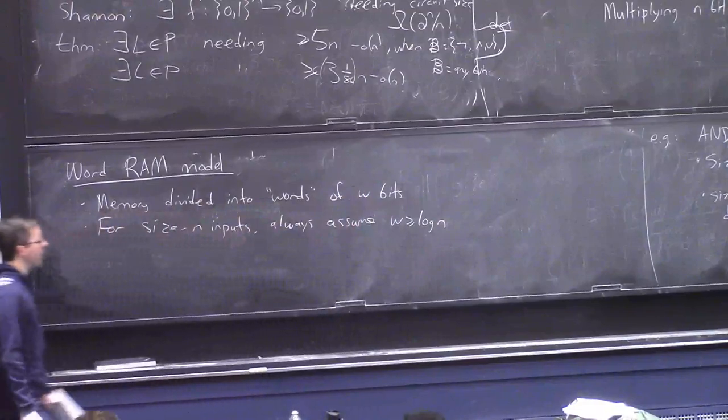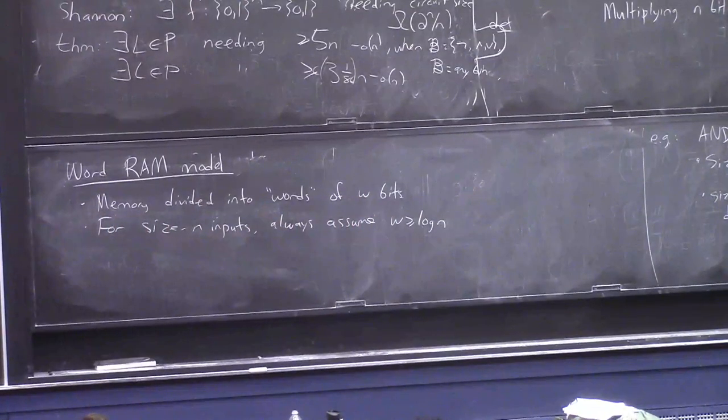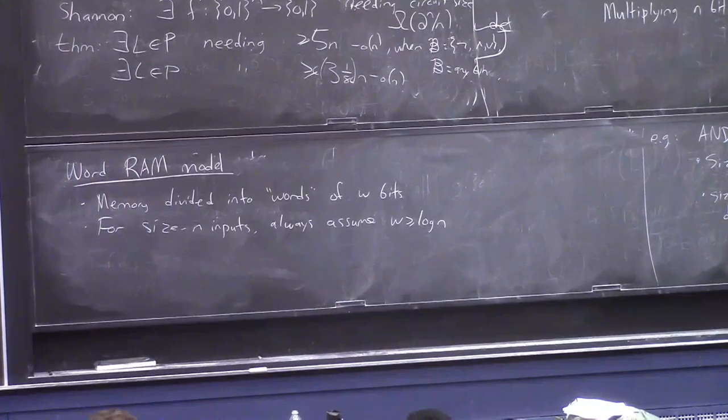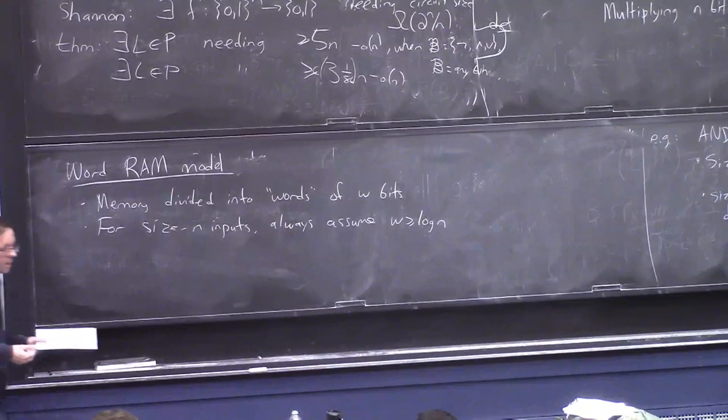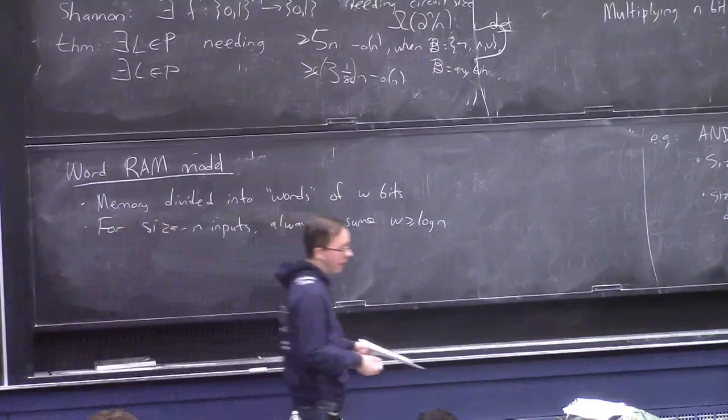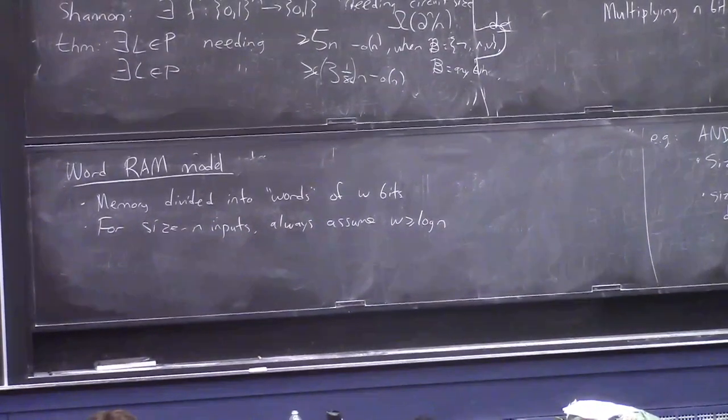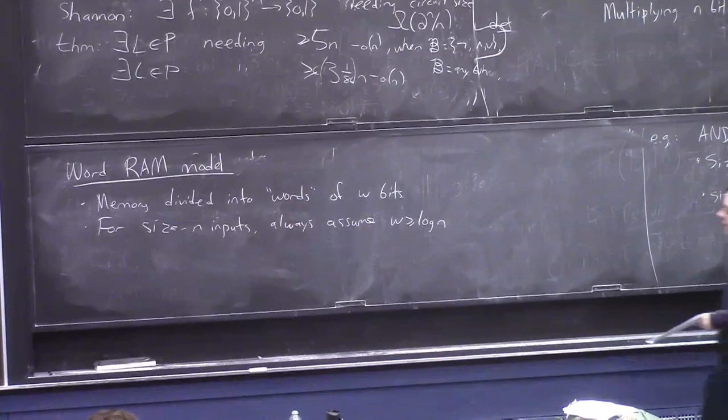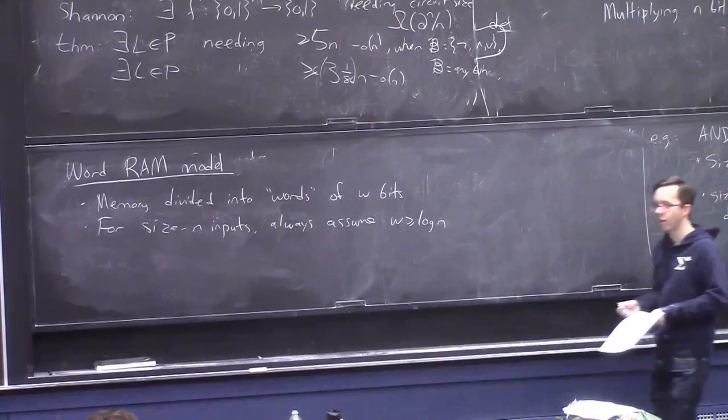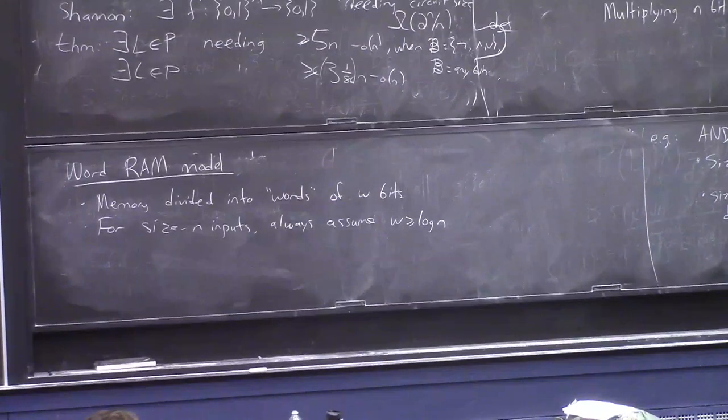And for size and inputs, you always assume that W is at least log N. Now, the first time you see this, it seems very stressful and weird that you assume that the size of your word, like your hardware, actually depends on the length of the input to the machine, like the problem. That sounds weird.